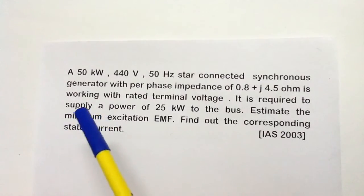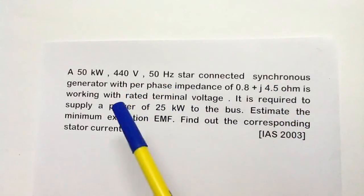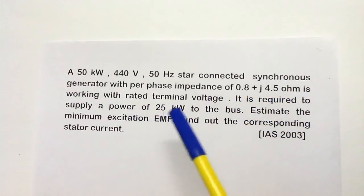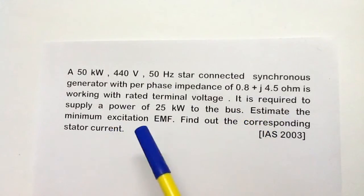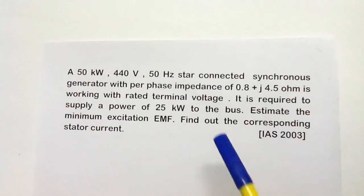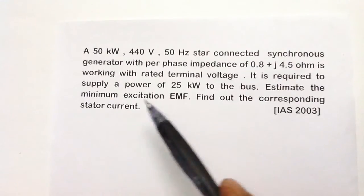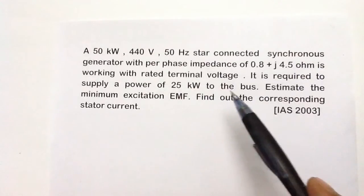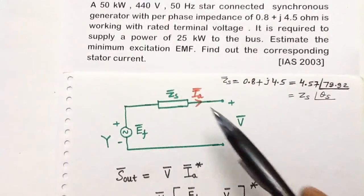Let us solve this problem. A 50 kilowatt, 440 volt, 50 Hertz star-connected synchronous generator with per phase impedance of 0.8 + j4.5 ohm is working with rated terminal voltage. It is required to supply a power of 25 kilowatt to the bus. We have to calculate the minimum excitation EMF and the corresponding stator current. To solve this problem, let us first draw the equivalent circuit of the synchronous generator.